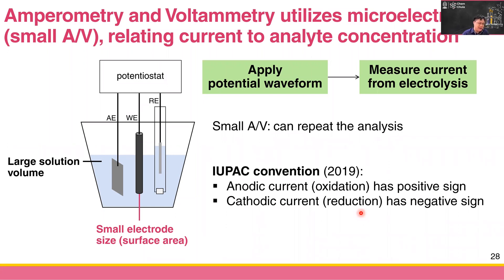For example, if we measure plus 10 milliamps, then we know it is oxidation. In contrast, if we detect minus 5 microamps, it is negative, so it is a reduction. We define the sign to make things less confusing.